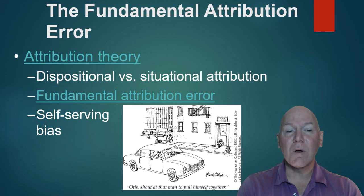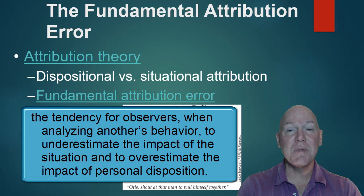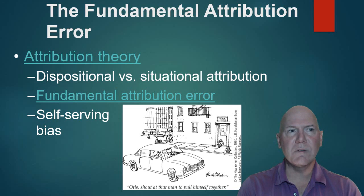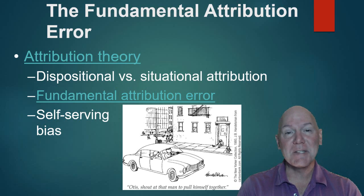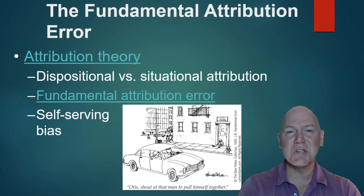We do this so often we call it the fundamental attribution error — not giving enough credence to the situation that the person is in. This is also a self-serving bias: when we do poorly on a test, we blame the situation, but when we do well, we give ourselves a dispositional explanation — that we are good people who worked hard.